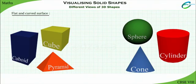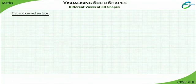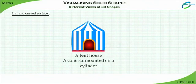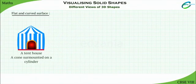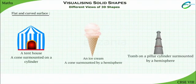Let us look into some of the objects which are surmounted by another 3D object. A tent house: a cone surmounted on a cylinder. An ice cream: a cone surmounted by a hemisphere. Tomb on a pillar: cylinder surmounted by a hemisphere.